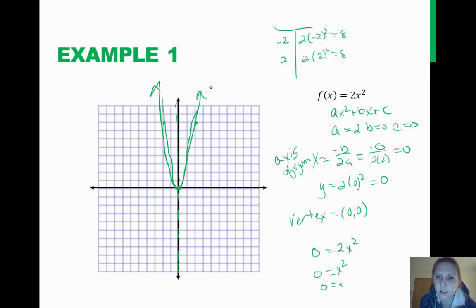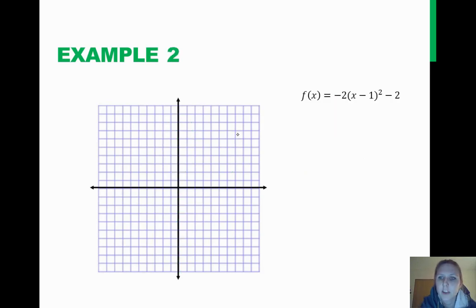Alright, let's look at another example. But before I go on, I wanted to point out something to you. Look at our A value. Notice that it's positive. If the A value is positive, it's going to point up. Look at our A value in this case. It's negative. So we know that it's going to point downward, or open downward.